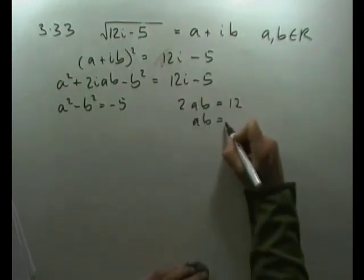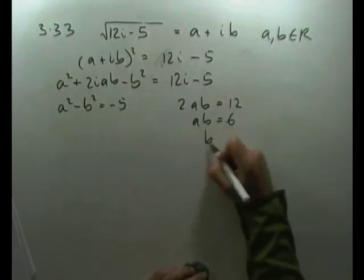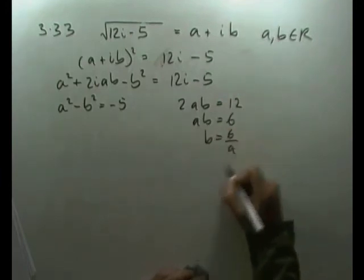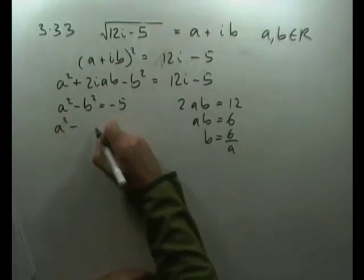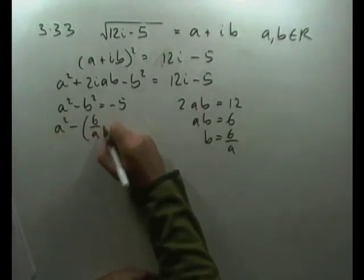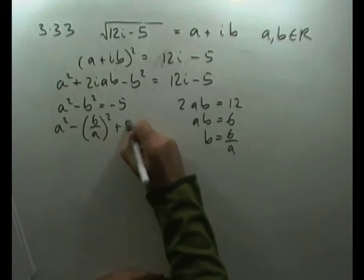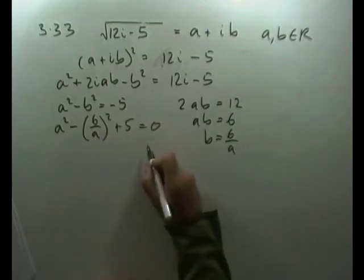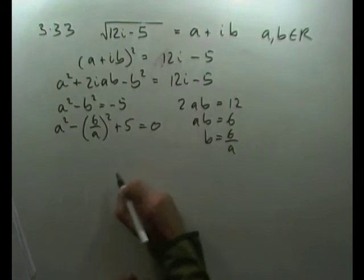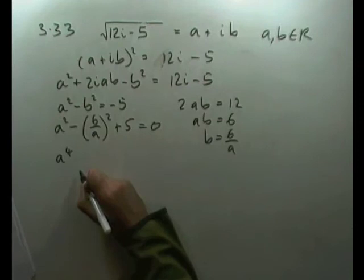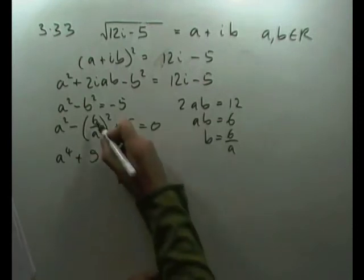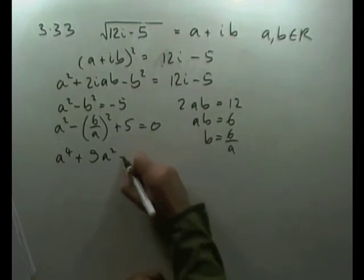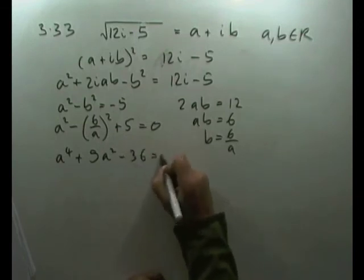So ab = 6, and b = 6/a. Substituting: a² - (6/a)² = 0, which gives a² - 36/a² = 0. Multiplying throughout by a²: a⁴ + 5a² - 36 = 0.